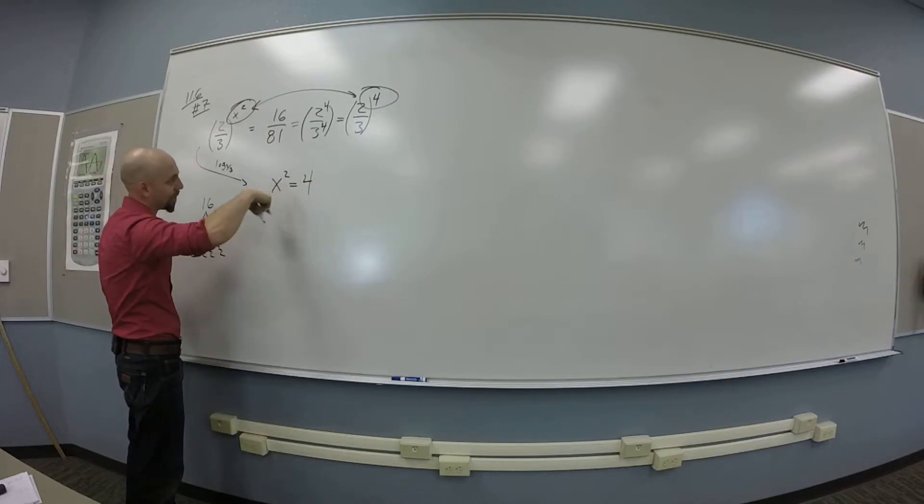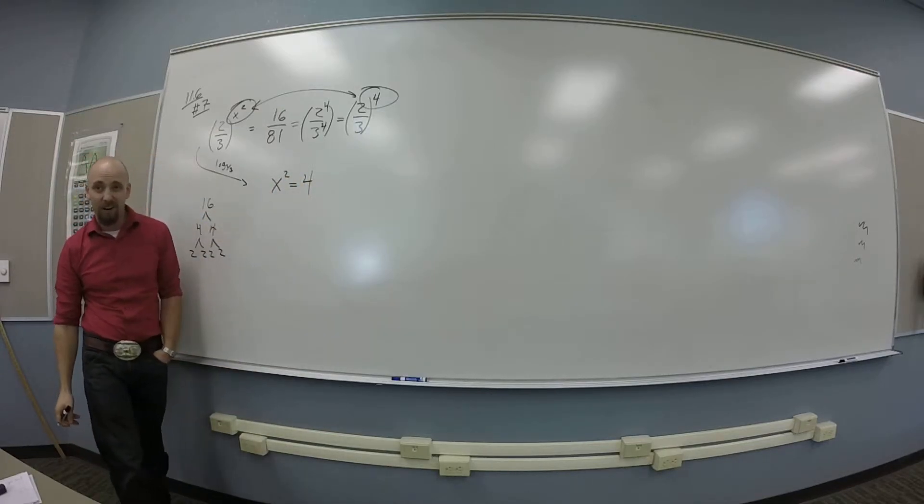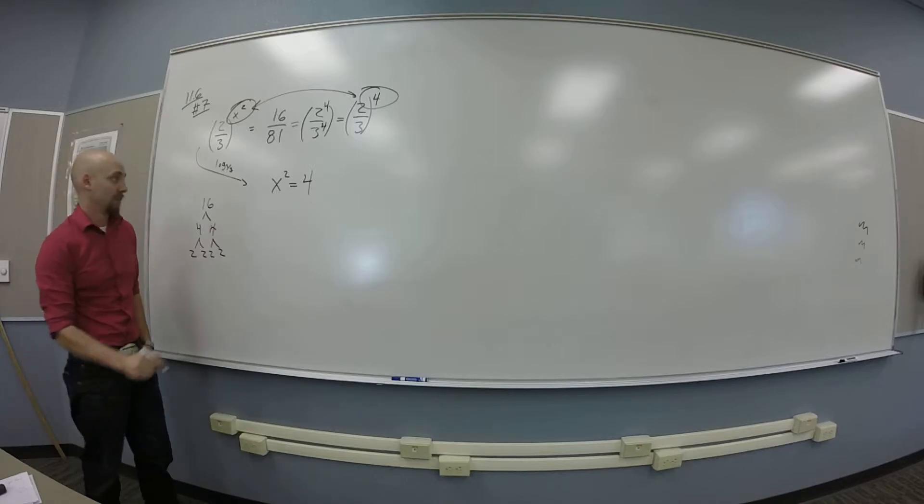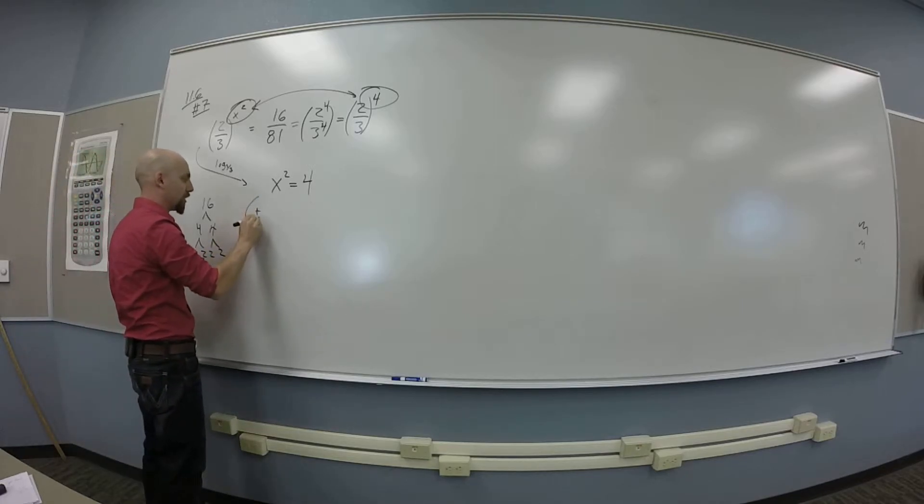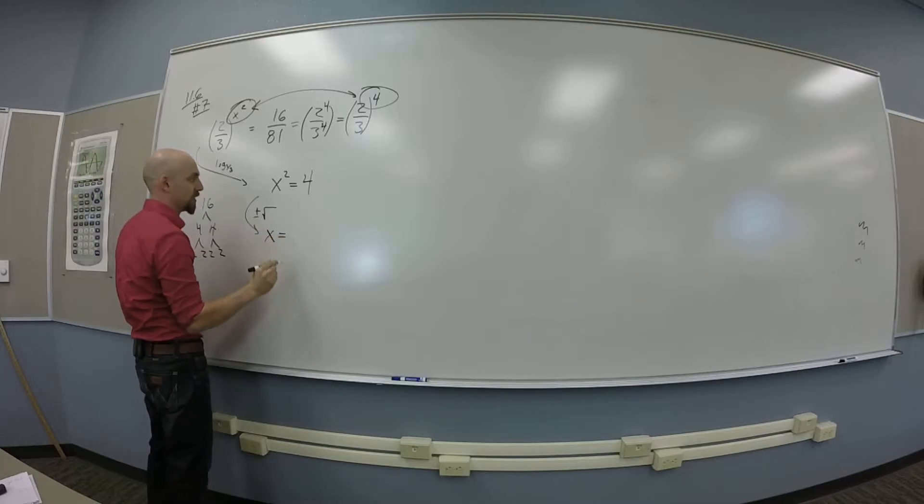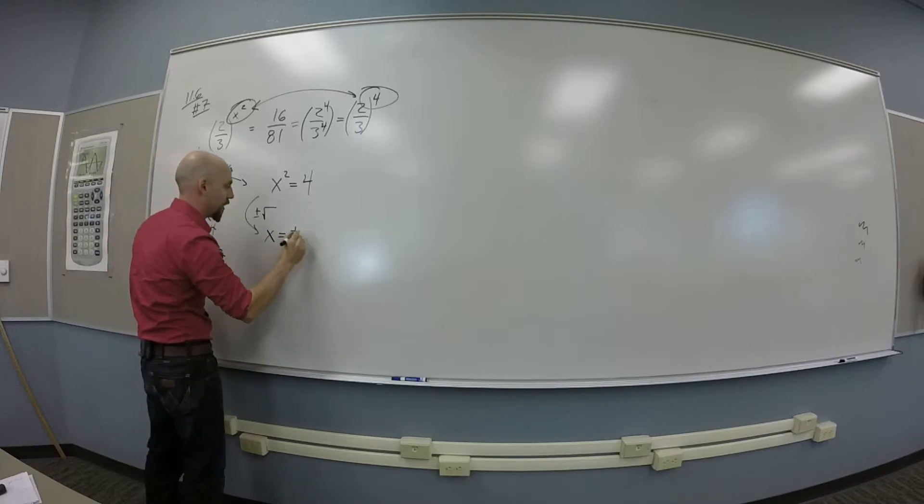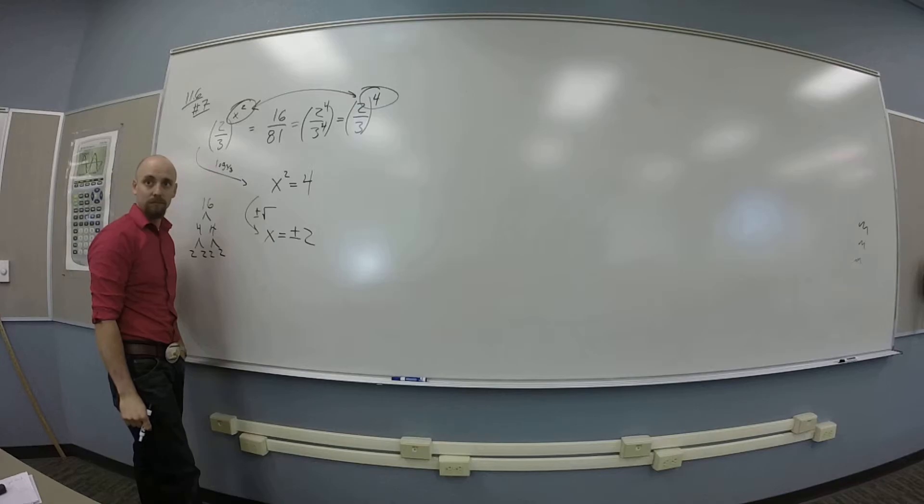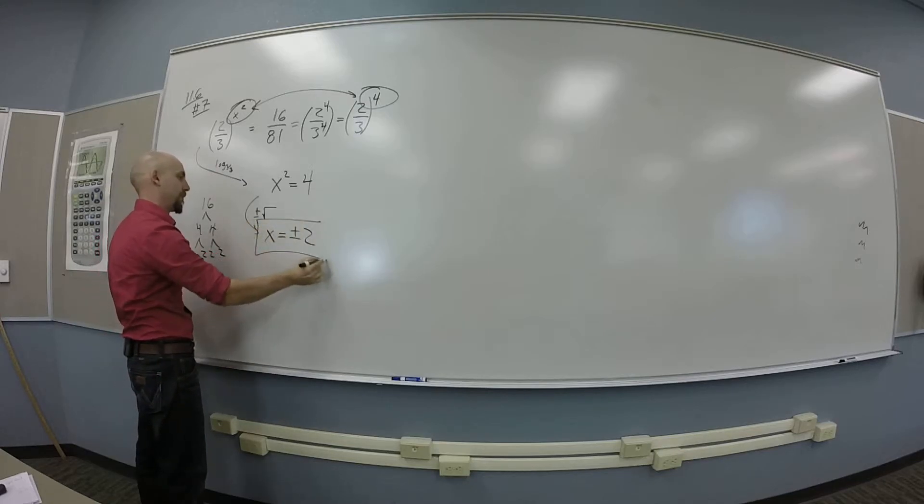So from here, how do I solve? I've got x squared is 4. Square root is 4. Both sides. Technically, plus or minus. Okay. Good. I throw a plus or minus square root on both sides. So I get x is? Plus or minus 2. Plus or minus 2. Plus or minus 2. Thank you.